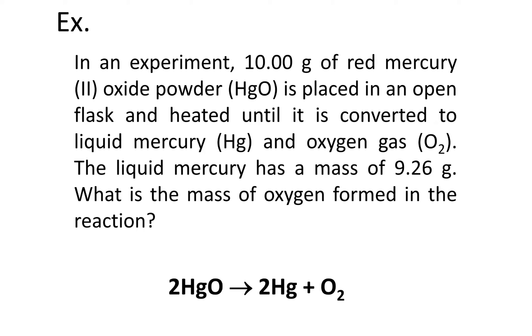Let's look at this first example, example number one. In an experiment, 10 grams of red mercury(II) oxide powder, HgO, is placed in an open flask and heated until it is converted to liquid mercury, Hg, and oxygen gas, O2. The liquid mercury has a mass of 9.26 grams. What is the mass of oxygen formed in the reaction?